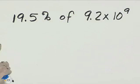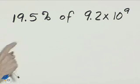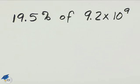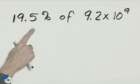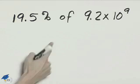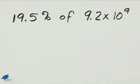We'll start with the 0 to 14 age group, which is 19.5 percent of 9.2 times 10 to the 9th. We need to change 19.5 percent to scientific notation and then multiply it by 9.2 times 10 to the 9th power.